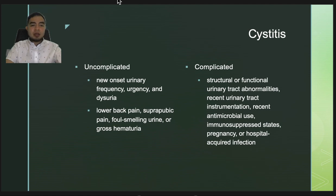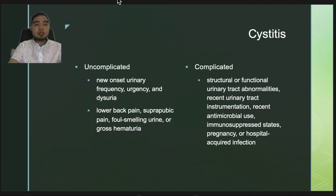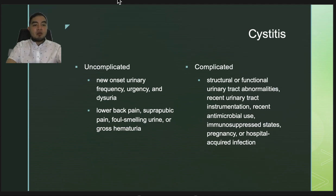Cystitis typically presents with new onset urinary frequency, urgency, and dysuria. Patients may also report lower back pain, suprapubic pain, foul-smelling urine, or gross hematuria. Urinalysis with microscopy assists with diagnosis by confirming the presence of pyuria, hematuria, and bacteriuria.